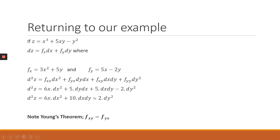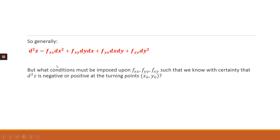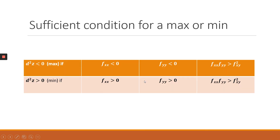Now that we have the second total differential, we need to decide whether we have a maximum or a minimum. The decision rule is summarized in a table: for a maximum, the direct partials f_xx and f_yy must both be less than zero, and the product of the direct partials must be greater than the product of the cross-partials. If these three conditions are satisfied, we conclude there is a maximum.